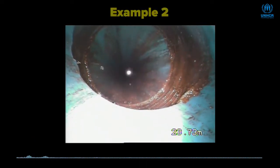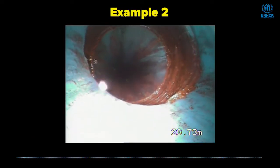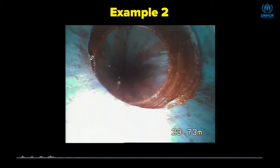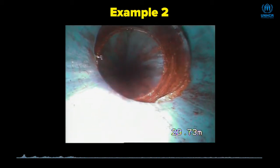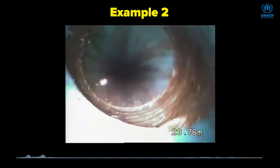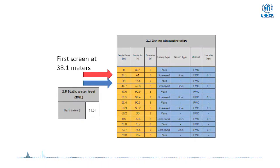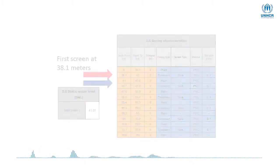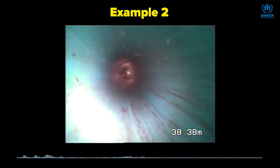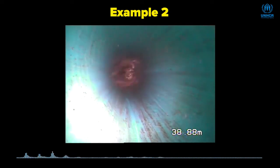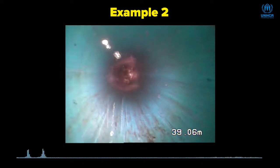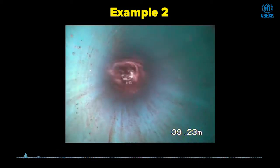Another example revealed the effects of damaged casing where the threads were visible. According to the borehole record, the first screen should have been encountered at 38 meters, above the static water level at 41. The well inspection confirmed the depth of the static water level, but no screens were encountered at 38 meters. So here again, the difference between the well documentation and the as-built situation.